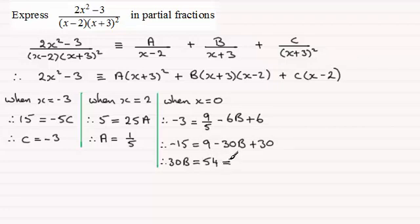So if I divide both sides by 30, B will be equal to 54 divided by 30. And I can reduce this down. If I divide top and bottom by 6, I can see this comes to 9 over 5. 9 fifths then.